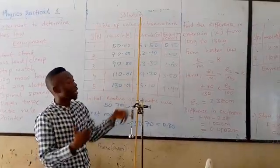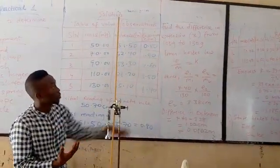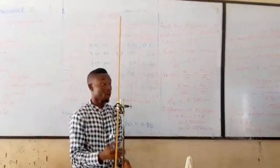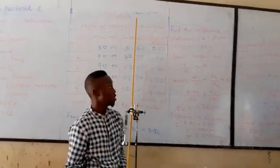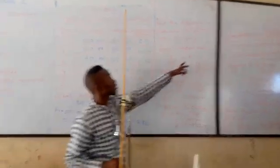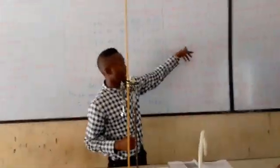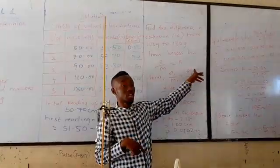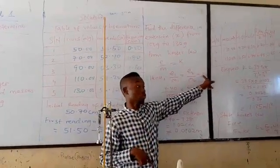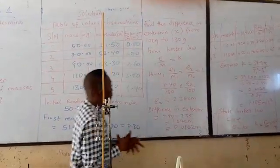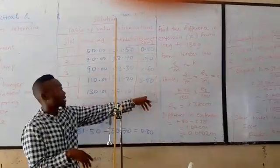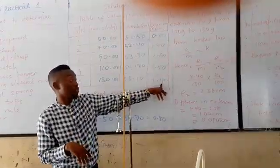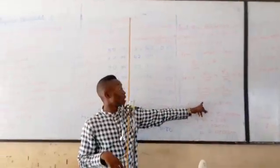But we know therefore that there will definitely be an extension at that 100 grams. So from Hooke's law, Hooke's law states that force is directly proportional to extension, so the constant of proportionality k is equal to F over e. So the first extension over the first mass is equal to the second extension over the second mass, which is equal to the constant. So therefore, we record the extension at 130 grams, which is 4.40. So we say 4.40 over 130